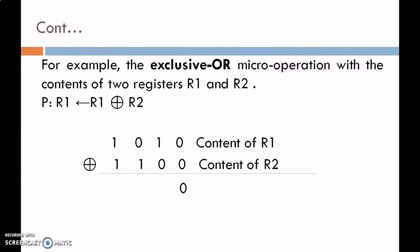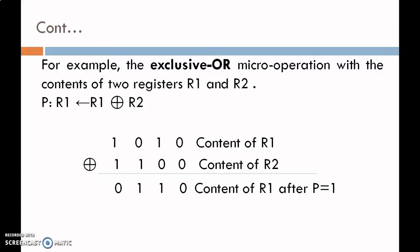According to the XOR truth table: 0 XOR 0 gives output 0; 1 XOR 1 gives 0; 0 XOR 1 becomes 1; and 1 XOR 0 becomes 1. So the result is 0110. This is the content of R1 which is stored after the EXCLUSIVE OR micro operation when P equals 1.